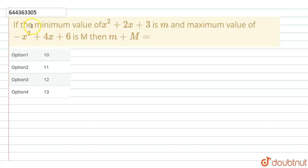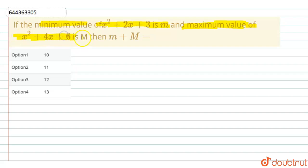The given question is: if the minimum value of x squared plus 2x plus 3 is small m, and the maximum value of minus x squared plus 4x plus 6 is capital M, then small m plus capital M is equal to?